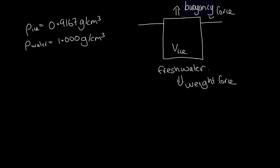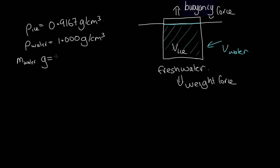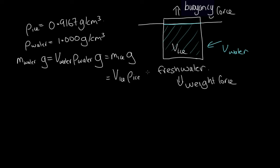The buoyancy force is equal to the weight of the water displaced. We can call this volume V_water — that's the volume of the water displaced. So the buoyancy force is equal to the mass of the water displaced times g, which is equal to the volume of the water displaced times the density of the water times g. And the weight force for the ice block is just equal to the mass of the ice times g, which is just equal to the volume of the ice block times the density of the ice times g.